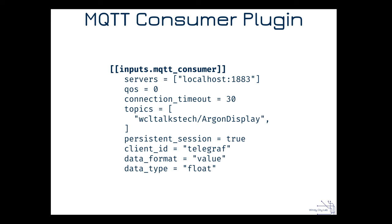The key thing is that this topic name has to be the same name we program on our Argon when posting temperature information — these have to match, otherwise they won't see each other. Keep the persistent session set to true. Also note that every client ID needs to be unique on the broker — if you fire this up on two instances talking to the same broker, the last one to connect will win, so make client IDs something unique.